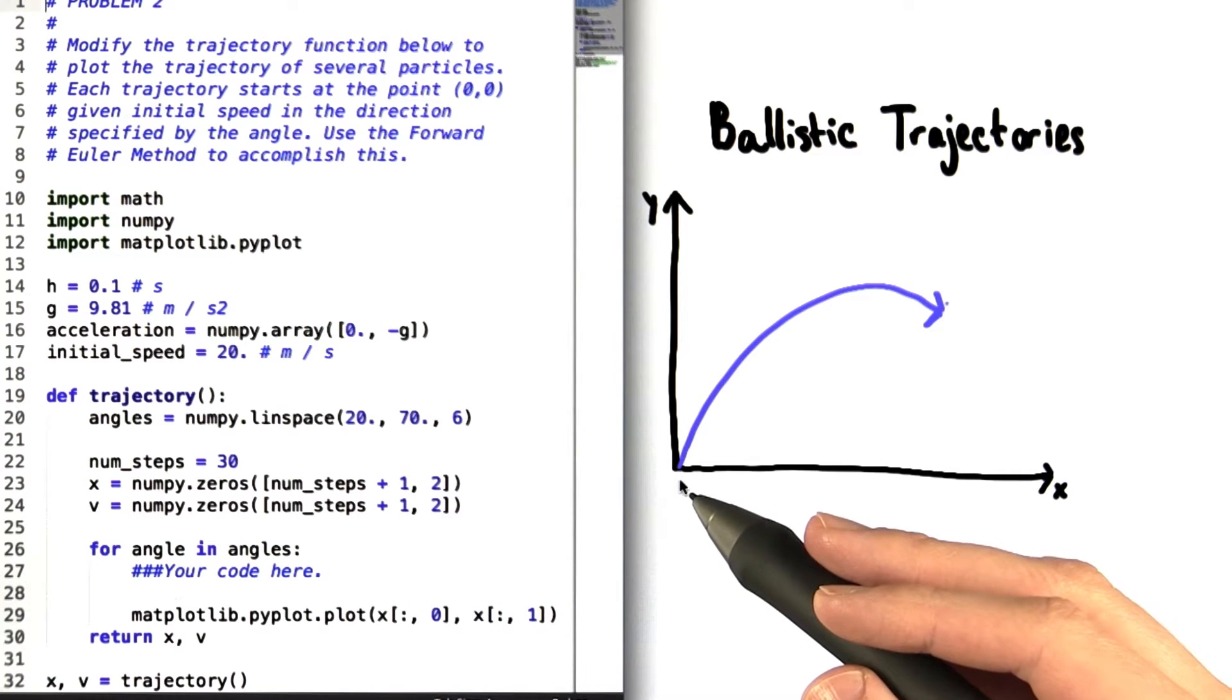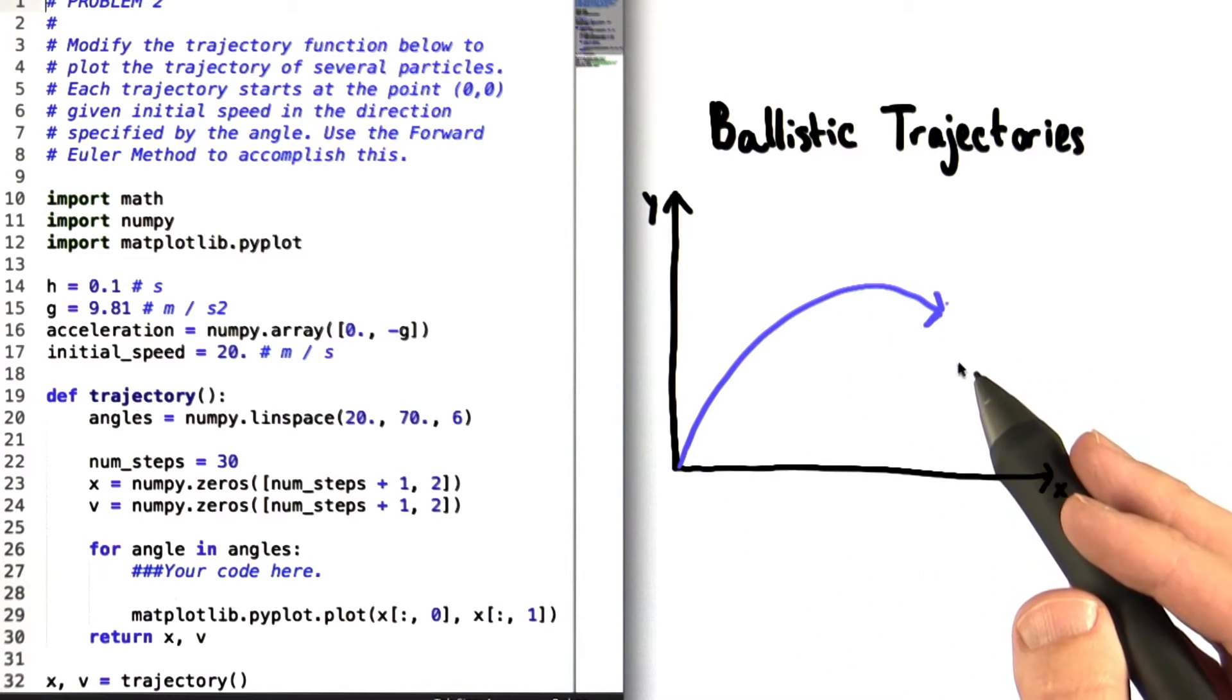Over here we see an example of what a ballistic trajectory of a particle with a given initial angle might look like.